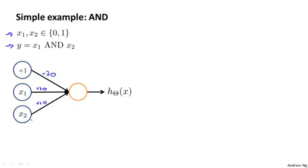And what this means is that I'm assigning a value of minus 30 to the value associated with x0, this is plus one going into this unit, and the parameter value of plus 20 that multiplies into x1 and the value of plus 20 for the parameter that multiplies into x2. So concretely, this is saying that my hypothesis h of x is equal to g of minus 30 plus 20x1 plus 20x2.